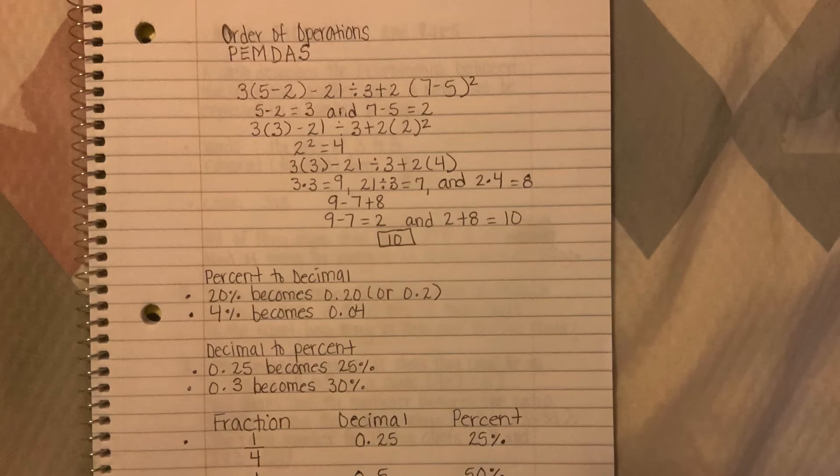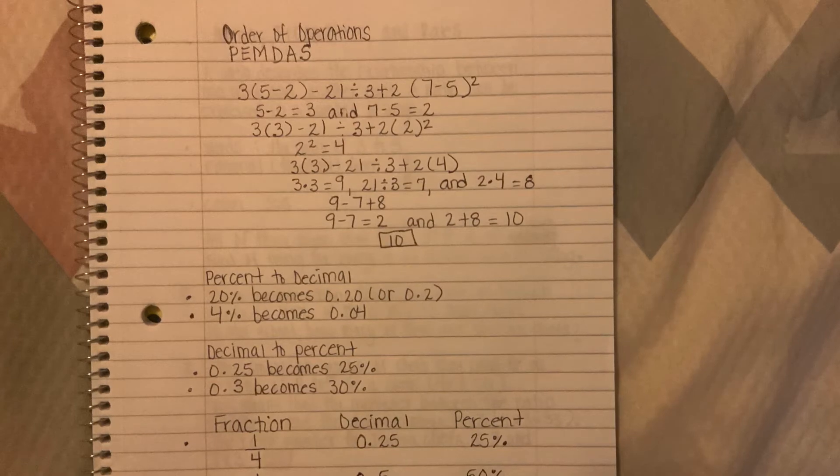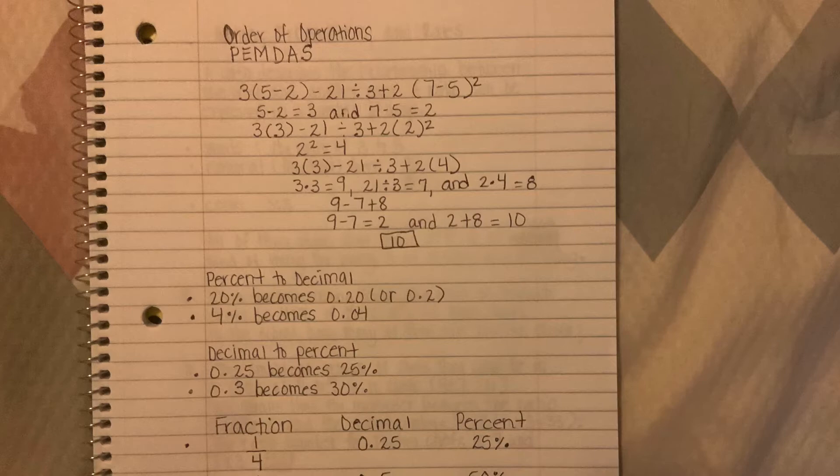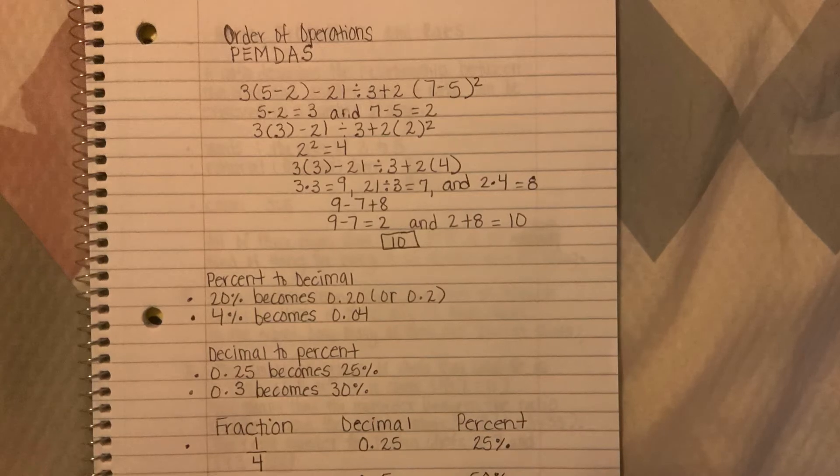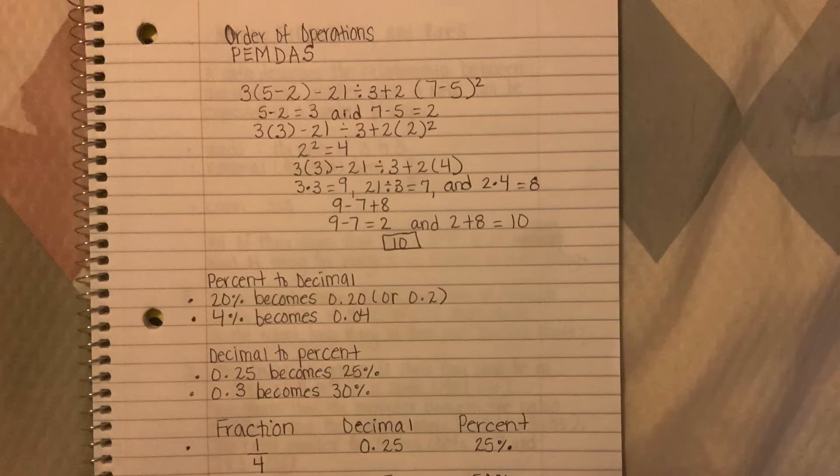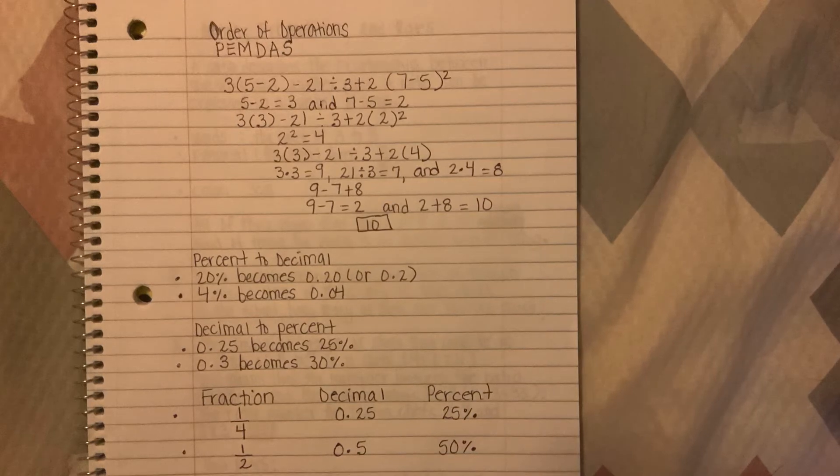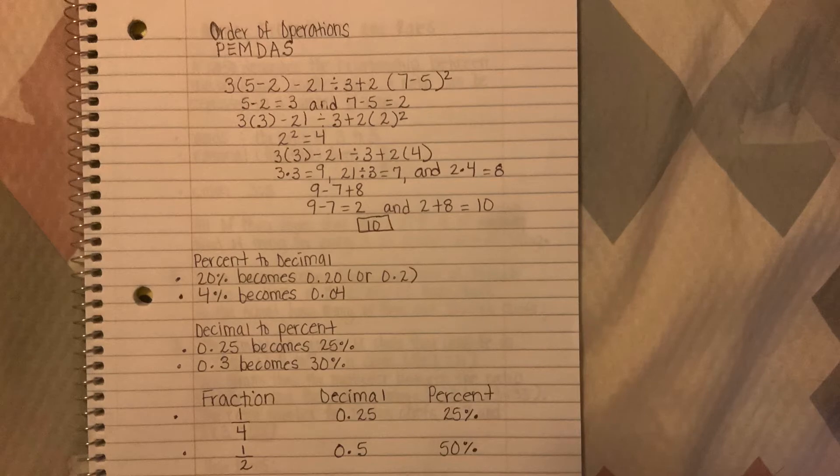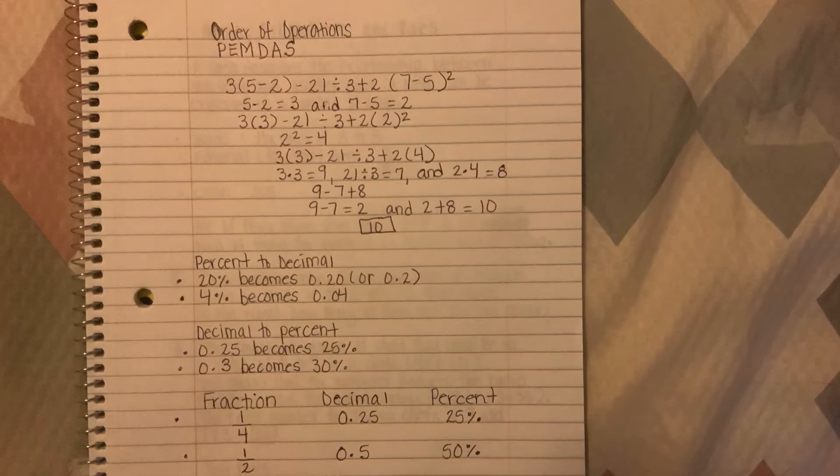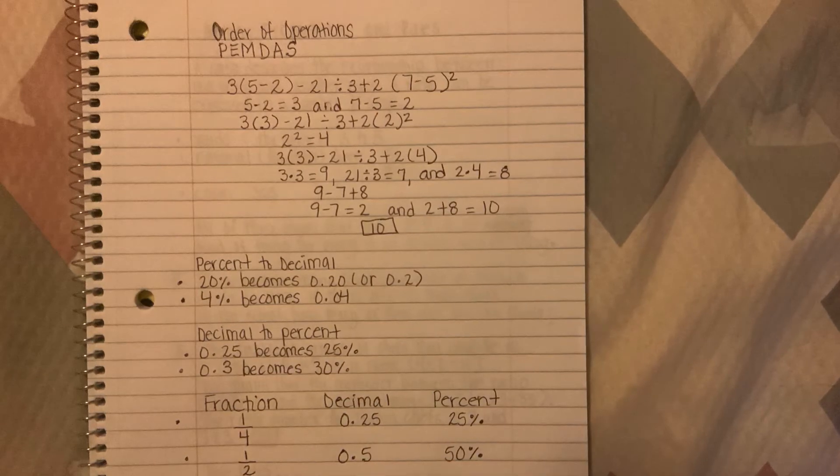2 squared equals 4, then we bring the problem down. We have 3 times 3 which is the same as multiplication, minus 21 divided by 3 plus 2 times 4. 3 times 3 equals 9, 21 divided by 3 equals 7, 7 and 2 times 4 equals 8. Bring that down: 9 - 7 + 8. Left to right, 9 - 7 equals 2, and 2 + 8 equals 10. So our final answer is 10.